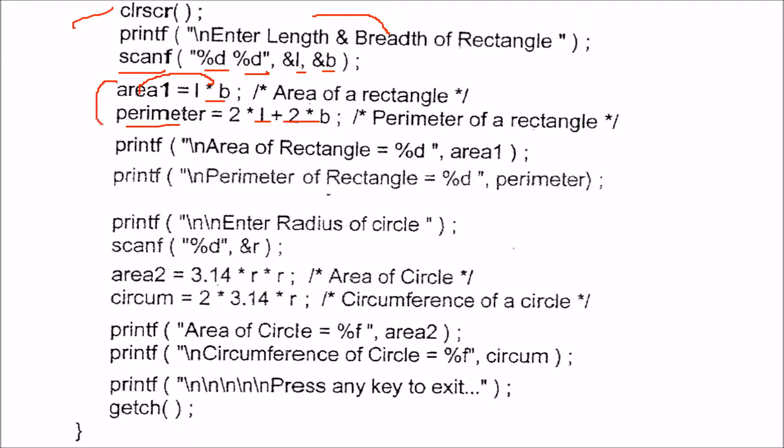You can print it here. Printf this area1 and printf this perimeter. So this will be printed.